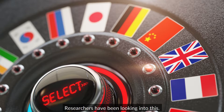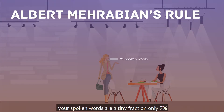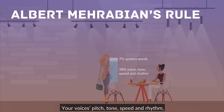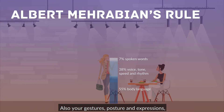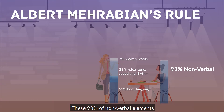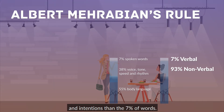Researchers have been looking into this. Here's the good news. According to Professor Albert Mehrabian's rule of personal communication, your spoken words are a tiny fraction — only 7% of what is read by the receiver, particularly in the expression of feelings. Your voice's pitch, tone, speed, and rhythm expresses five times more than what you say. Also, your gestures, posture, and expressions — what actors call status — convey a variety of subtle signals which represent more than 50% impact on your communication. These 93% of nonverbal elements give a more accurate indication about the speaker's feelings and intentions than the 7% of words.